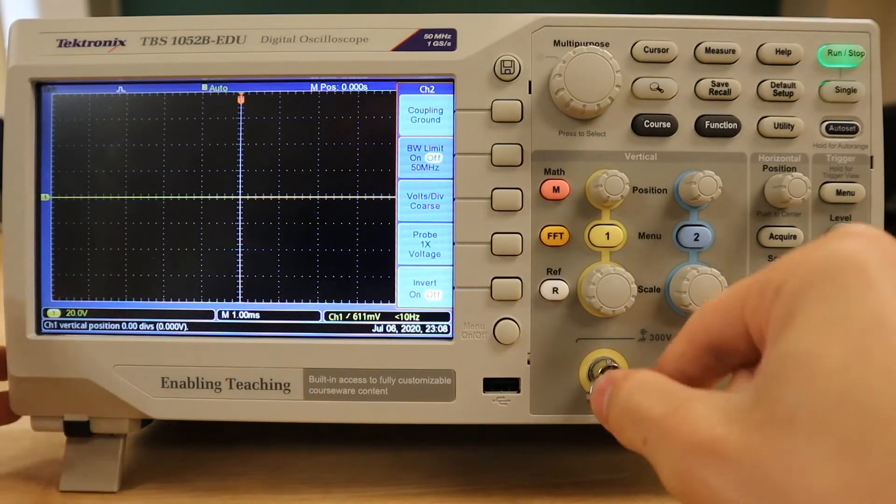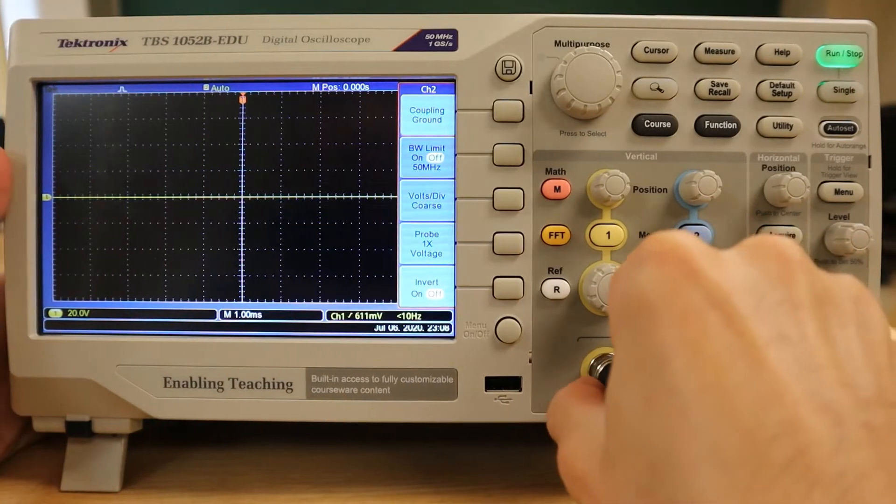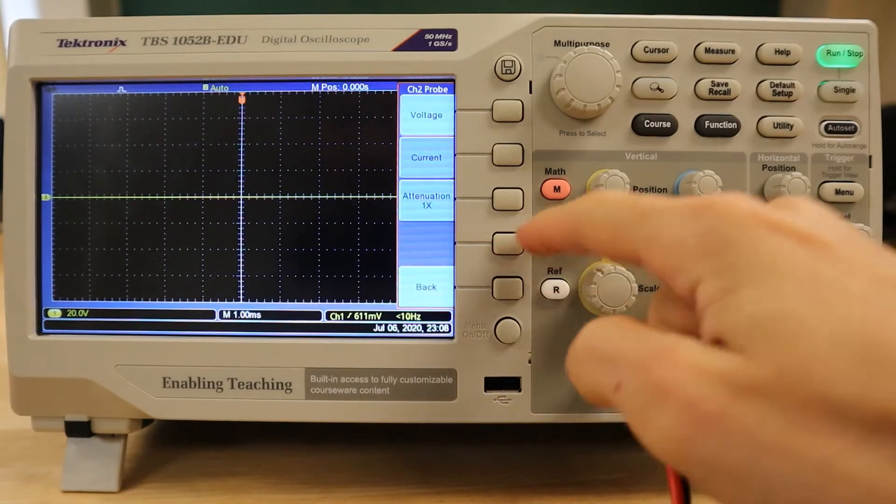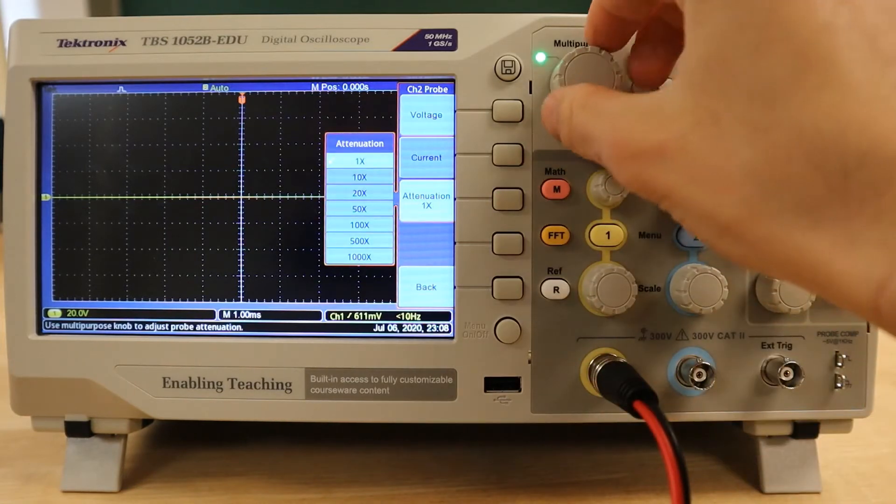Since we'll be connecting a BNC to banana cable, no attenuation factor is necessary, so we must make sure that the channel is set to 1x voltage magnification.